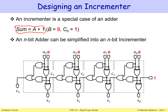By definition, that is an incrementer: one input A, output S equal to A plus 1. You can think of the incrementer as a special case of an adder. You can use an adder that adds two numbers A plus B, and make B equal to zero. To add the one, you use the input carry C0, making C0 equal to one, as shown in this slide.